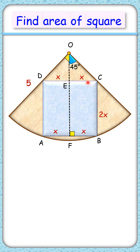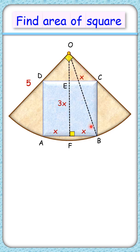Triangle OEC is an isosceles triangle with OE equal to x cm, and EF has the same length as 2x cm. Thus the full length OF will be 3x cm. Let's join OB, which is the radius of the circle and thus 5 cm.